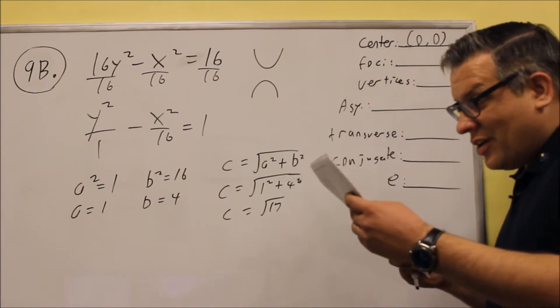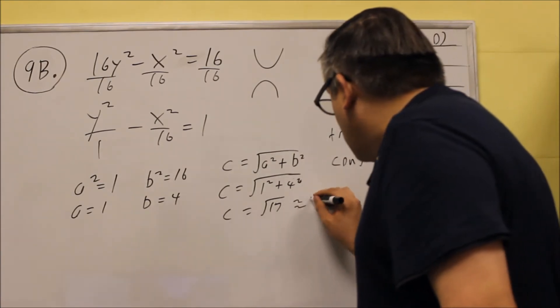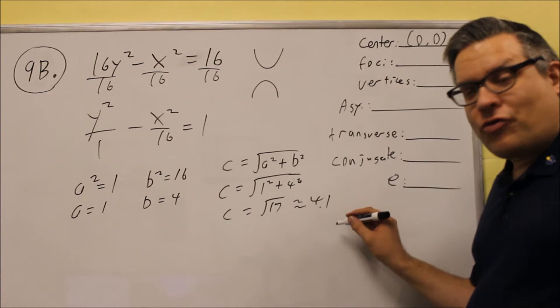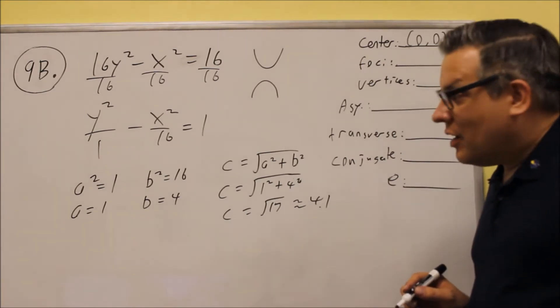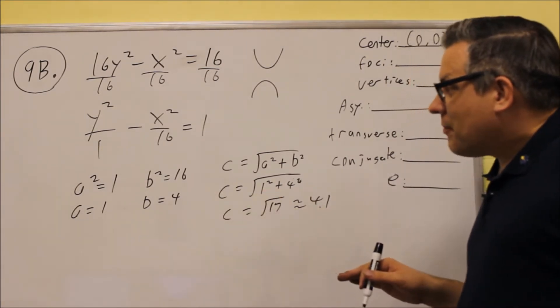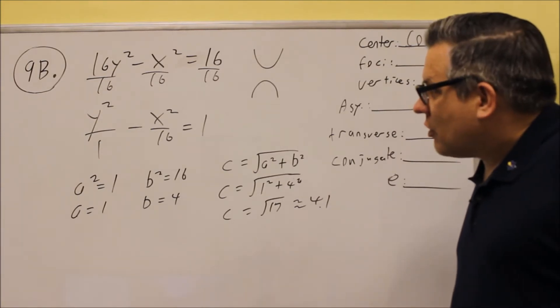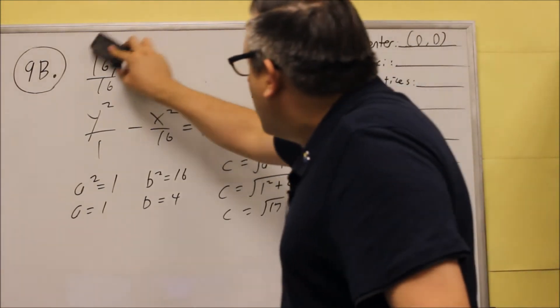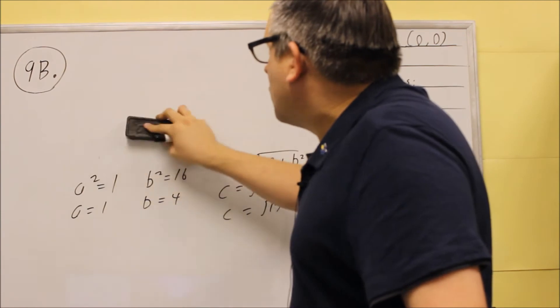So, the square root of 17 is about a little bit more than 4, so 4.1. Now, we have a, b, and c. We're ready to draw the graph. So, the graph, I'm going to actually do that up here so we have some more space.